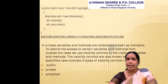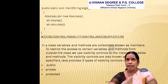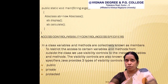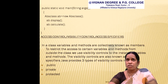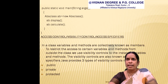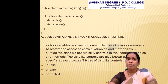In the main method, an object 'ab' is created for AbsClass: AbsClass ab = new AbsClass(). Using this object, the display method and calculate method are invoked and results are printed. The key rules to remember: abstract methods are in the super class, have no body, must be overridden in the subclass, and any class containing abstract methods must be declared as abstract.